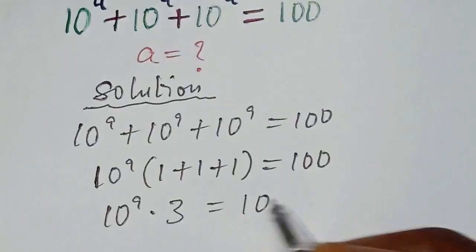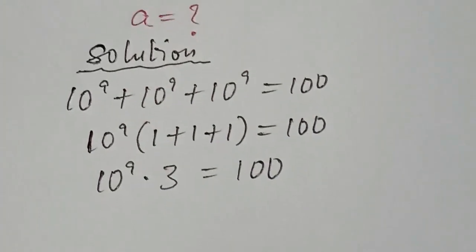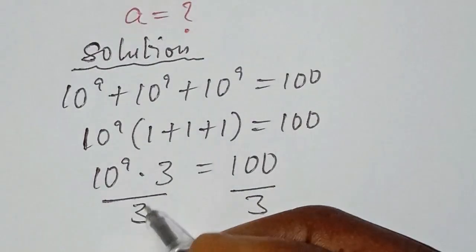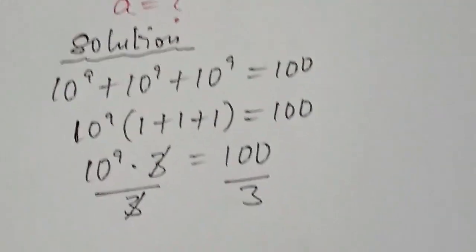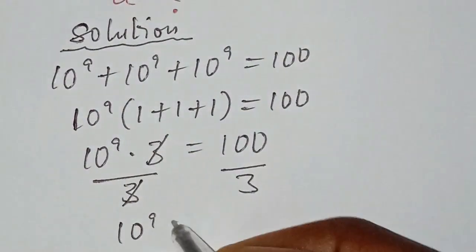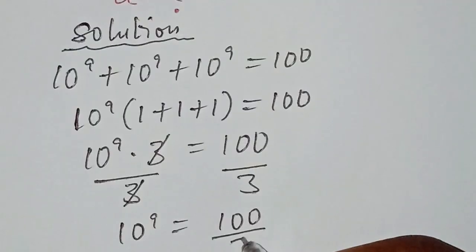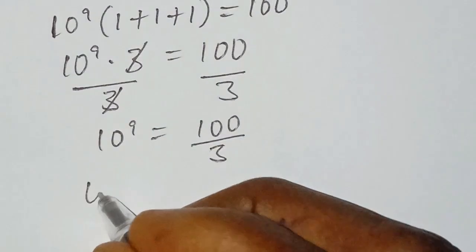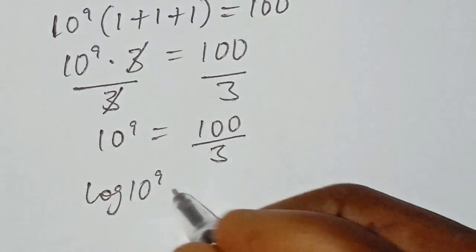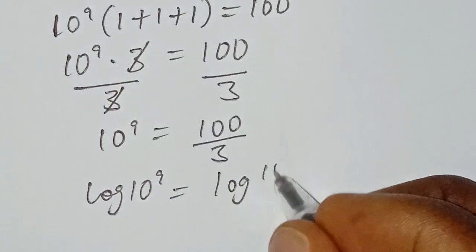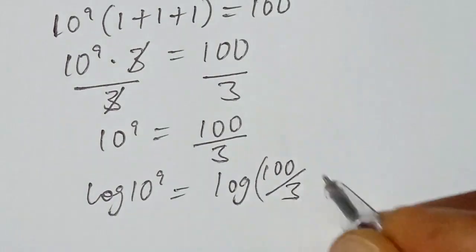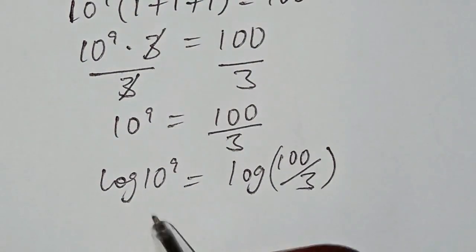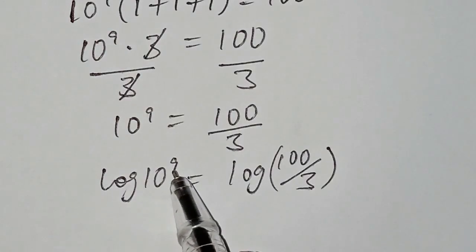Adding the expression in the bracket gives us 10 to the power of a, multiplied by 3, equal to 100. We divide both sides by 3, so we have 10 to the power of a equal to 100 over 3. Now we apply log to both sides: log of 10 to the power of a equals log of 100 over 3.